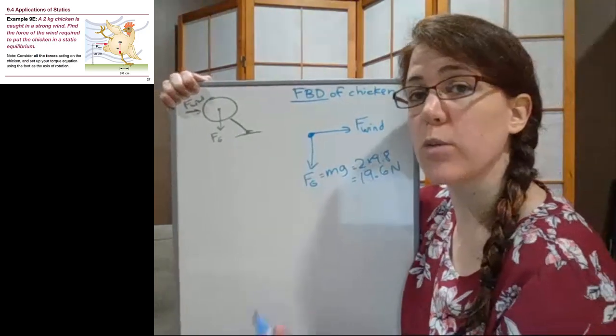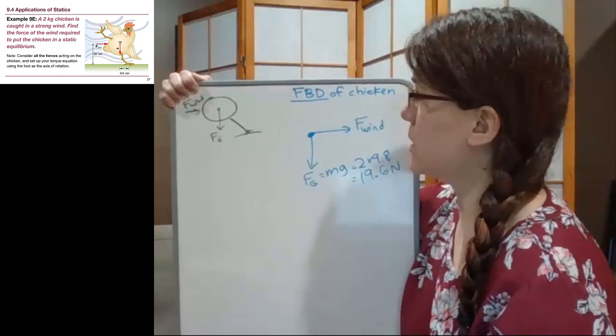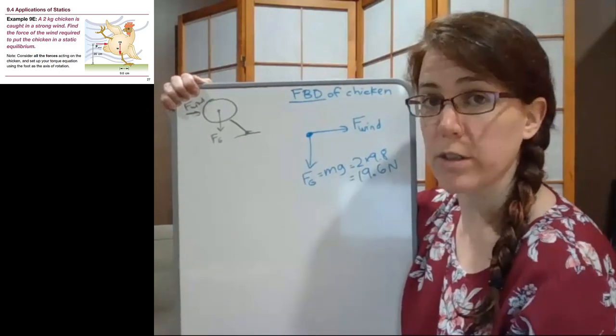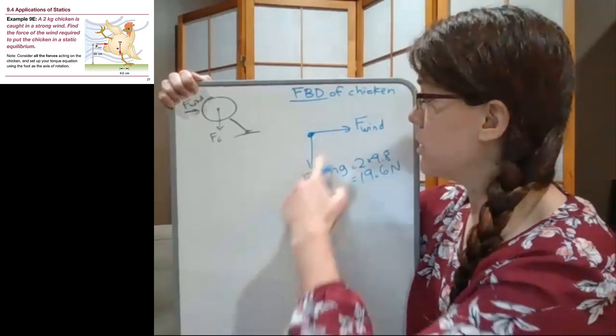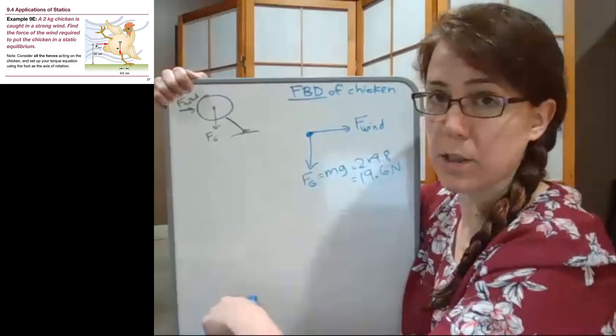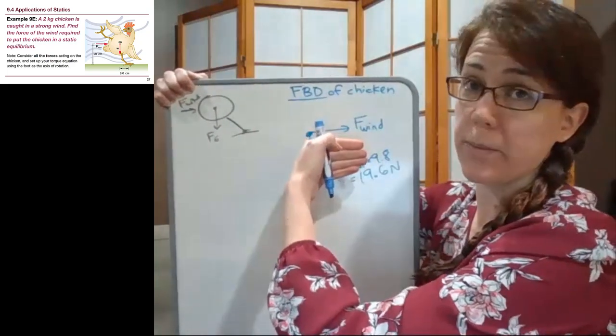And if we decided that that was the only pair of forces acting on this chicken, then we would see that there's a problem here. The net forces can't add up to zero if it looks like this for our force diagram. The chicken would be sinking into the ground and it would be sliding to the right.